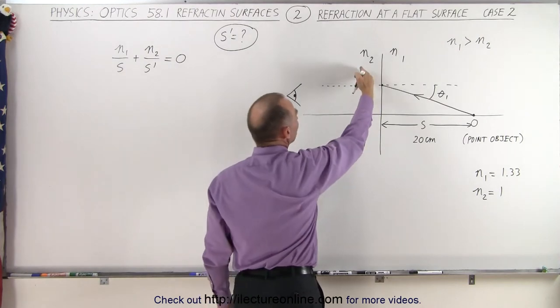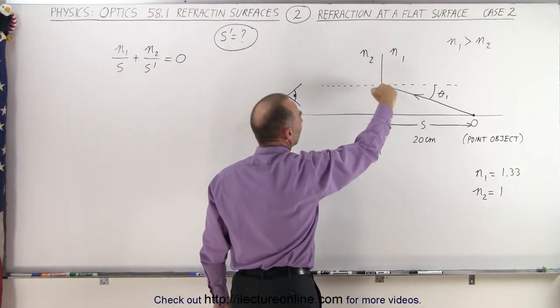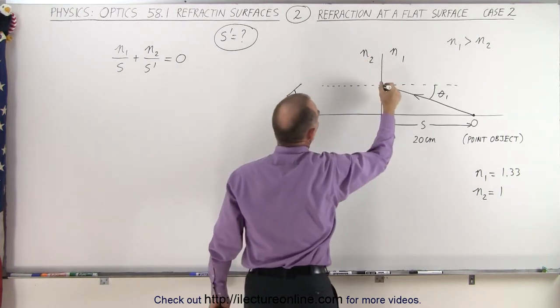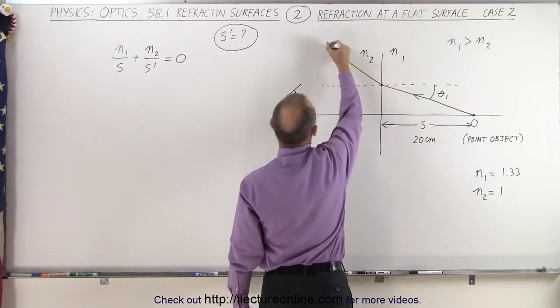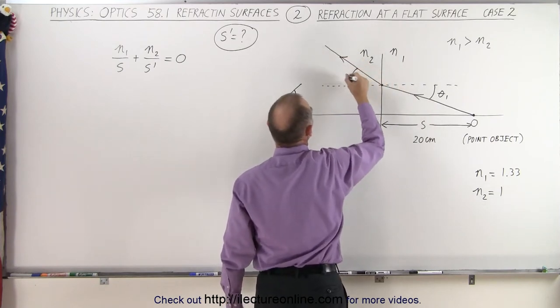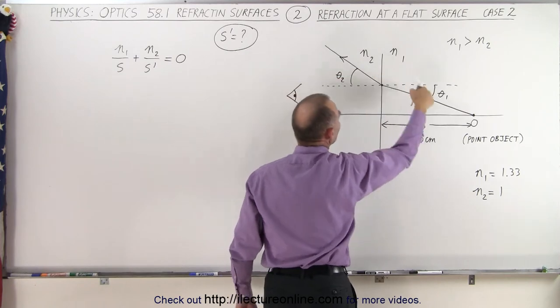Notice that since N2 is a smaller index of refraction, the ray will then bend away from the normal in a different direction like this. And you can see then that this angle theta sub 2 is a larger angle than theta sub 1.